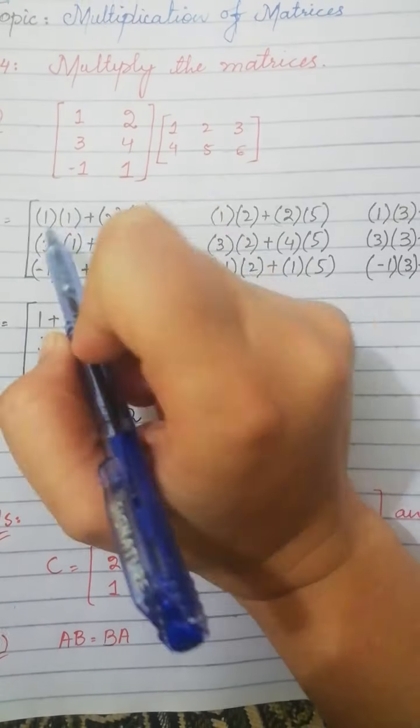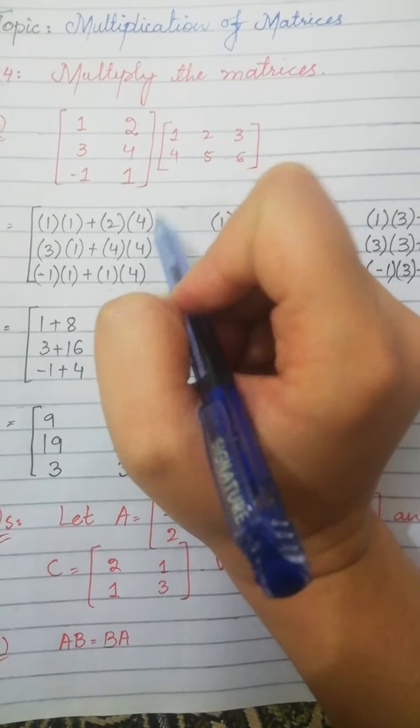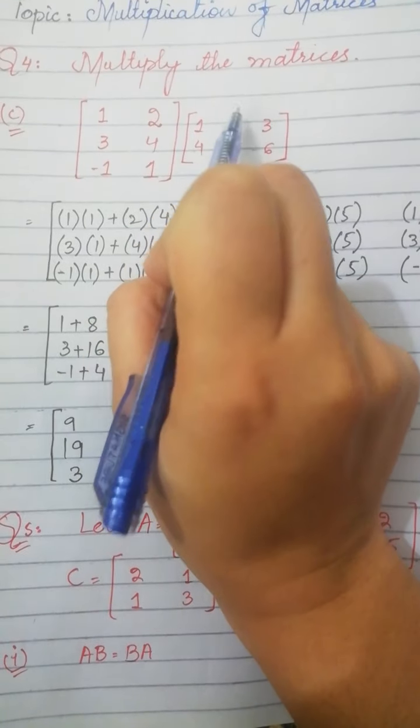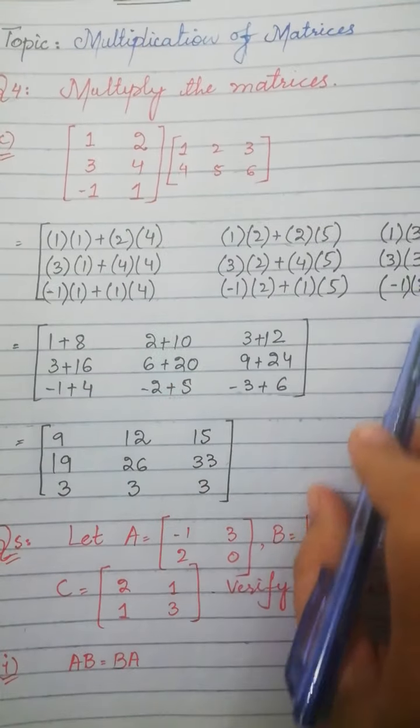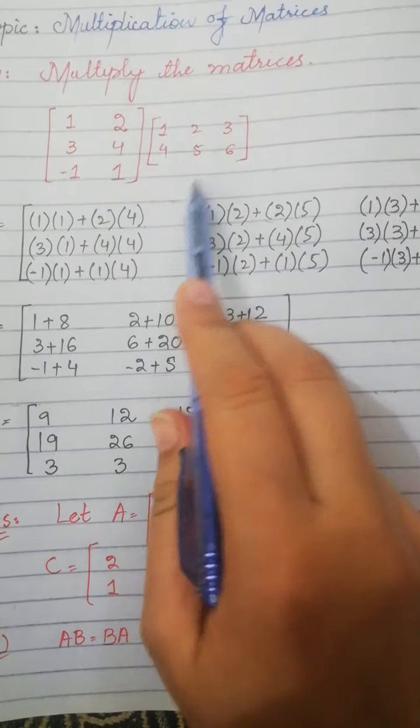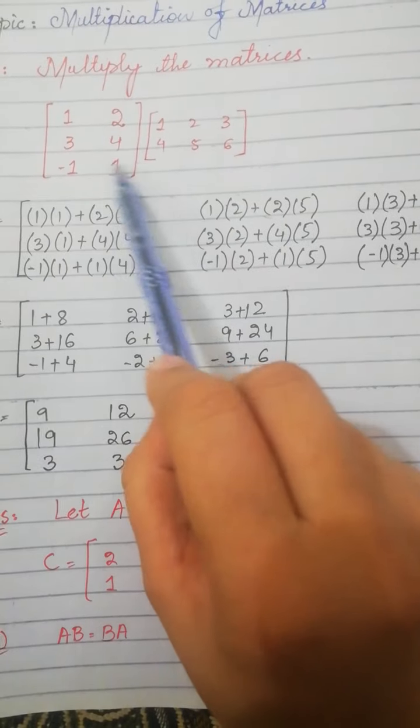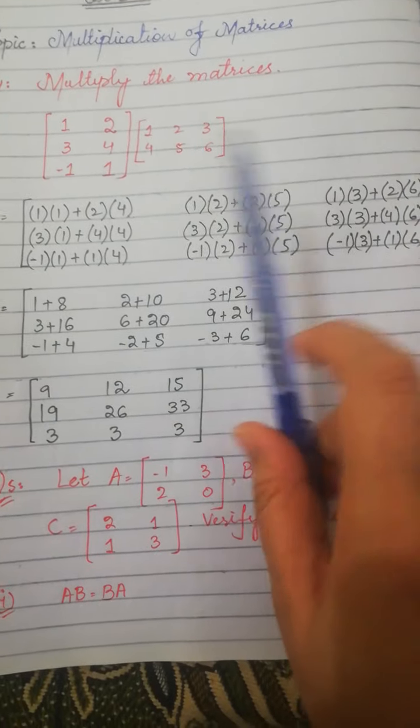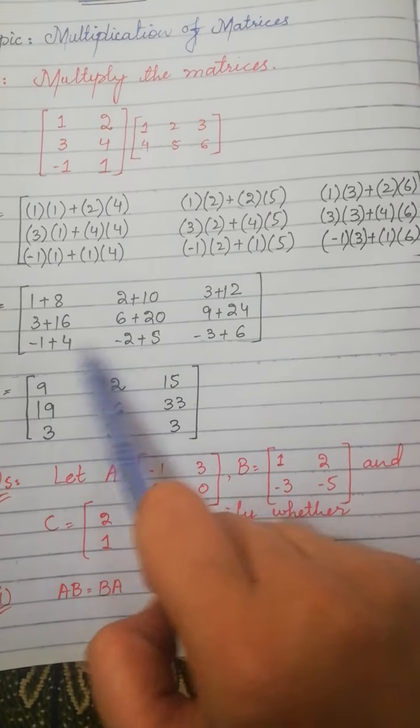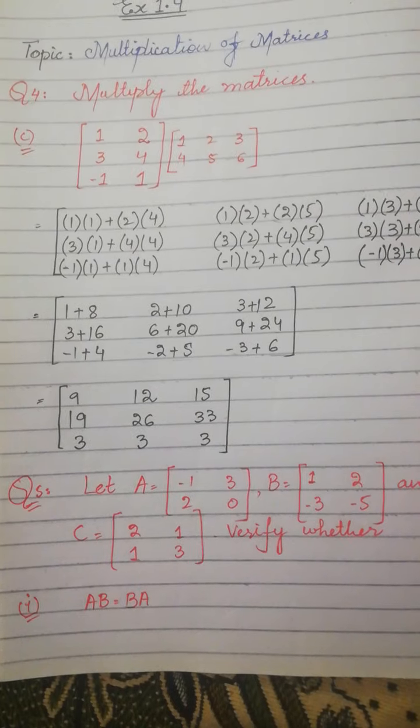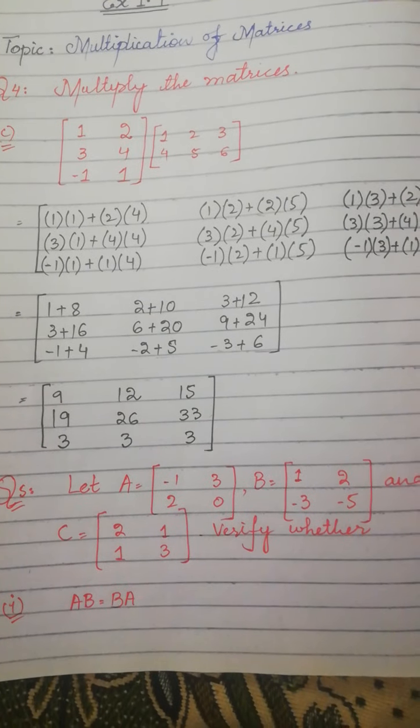1 will multiply 1 and 2 will multiply 4. The first row will multiply with the columns. We multiply each row with each column, add them, and then the answer will be solved the same as the previous question.